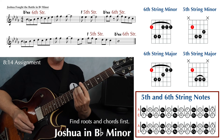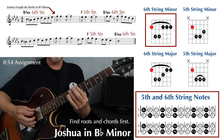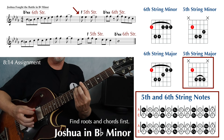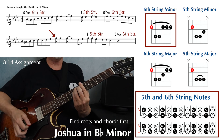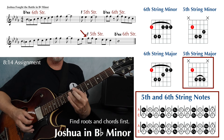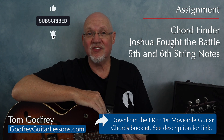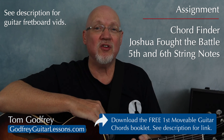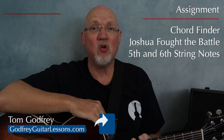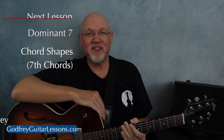Then play the song with whatever pattern you want. Your assignment is to practice the material on page four and to continue memorizing the notes on strings five and six as needed. I've got some videos that'll help you learn the fretboard — I'll leave links for those in the description. Also in the description you'll find a link to the free first movable chords booklet. Once you're comfortable with page four, I'll see you on page five, which focuses on two movable dominant seven chord shapes.